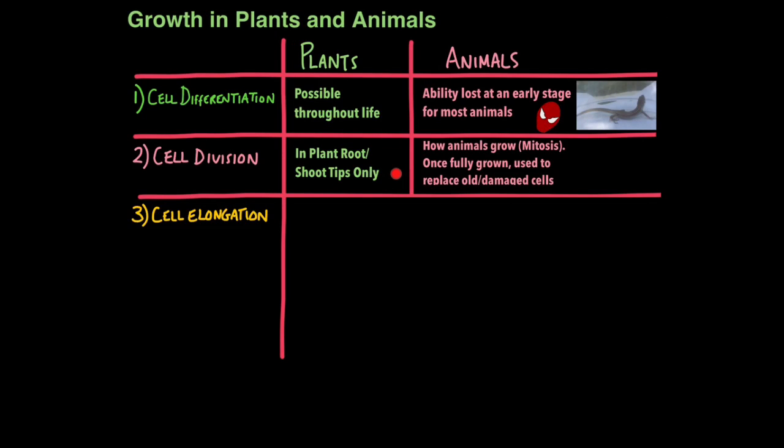Cell division does occur in plants, but only in the root tips and shoot tips, in a region called the meristem. Cell division for animals is generally how they grow. They go through the process of mitosis, but I've already discussed that once you reach a certain age, in other words, once you're fully grown, cell division is only used to replace old and damaged cells.